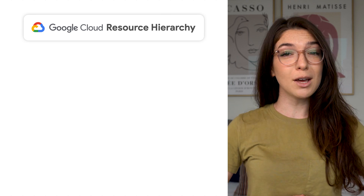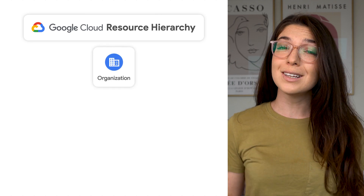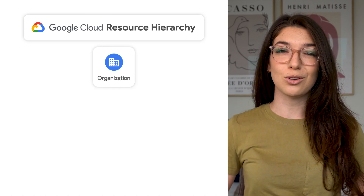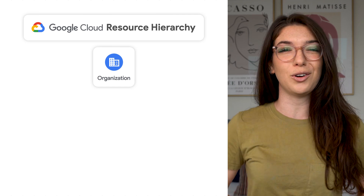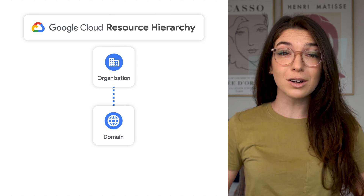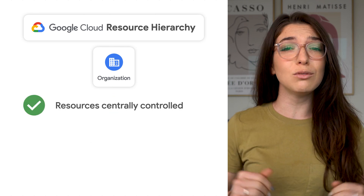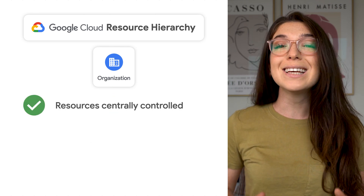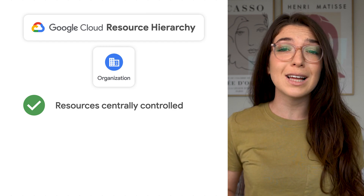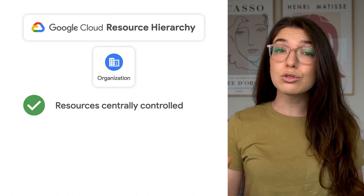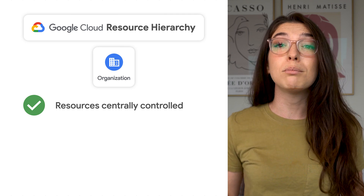Let's get started by talking about how BigQuery fits into the Google Cloud resource hierarchy. An organization is the root node of the Google Cloud resource model. It represents a company, probably the one you work for, and it's linked to a domain through a Google Workspace or Cloud Identity account. An organization resource isn't required to get started with BigQuery, but it is recommended. With an organization, resources like BigQuery datasets or tables can be centrally controlled by organization administrators, instead of solely being owned by the employee that creates them.